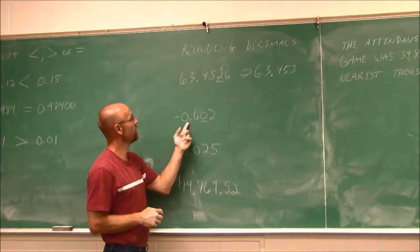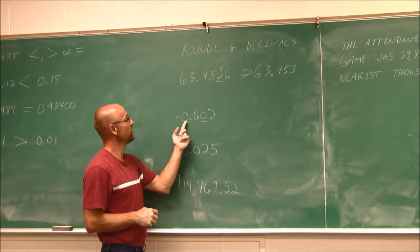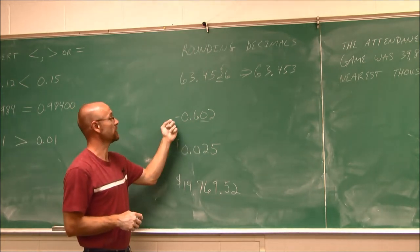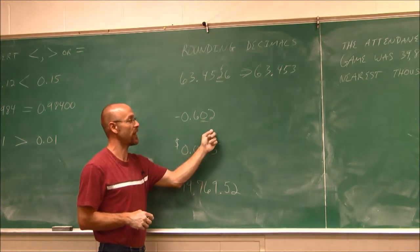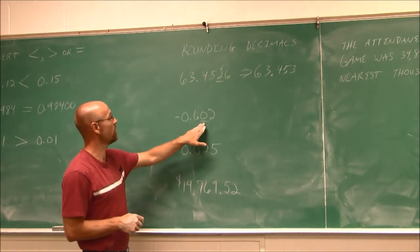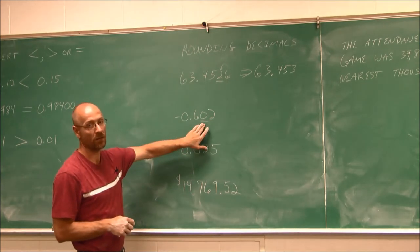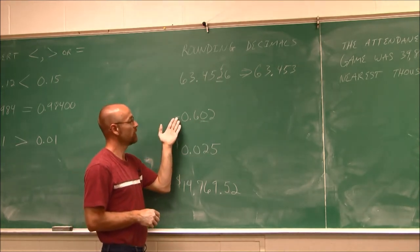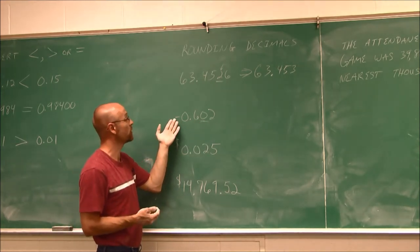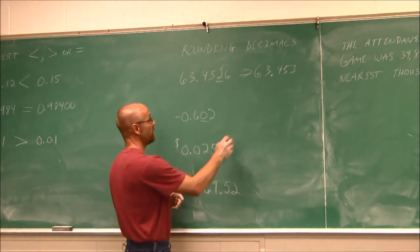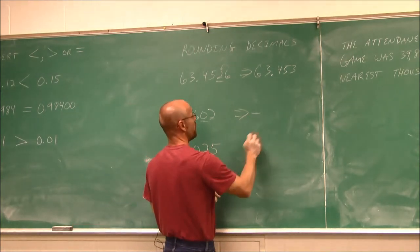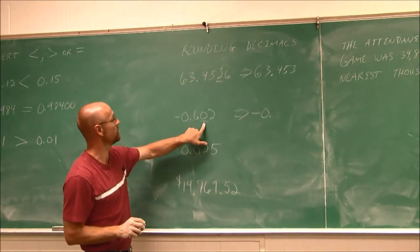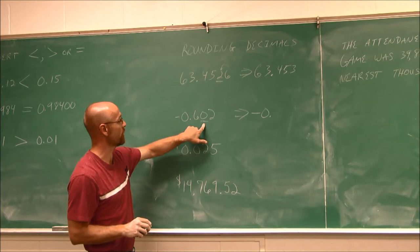The next one — we have negative 0.602, or we could read it as negative 602 thousandths. We want to round it to the hundredths. It doesn't matter if it's a positive or negative value — we round them the same. It will maintain that negative value. We just need to round it to the hundredths.